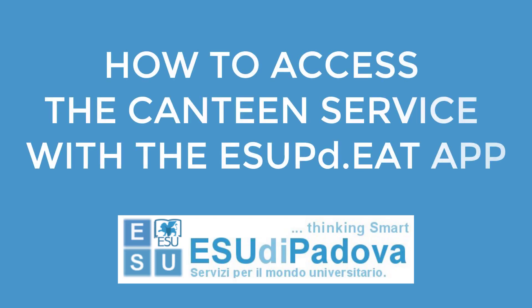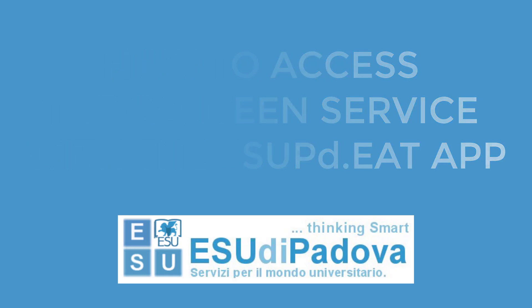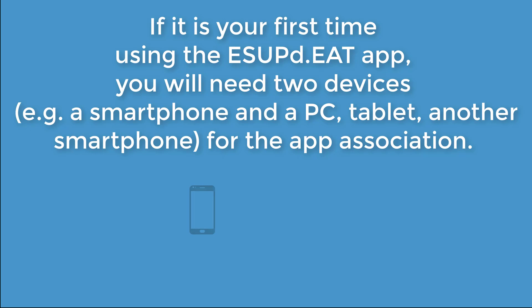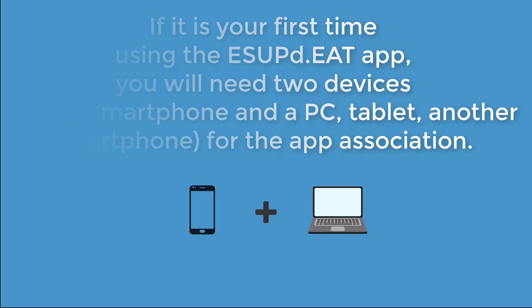How to access the contained service with the asopd.it app. If it is your first time using the asopd.it app, you will need two devices — for example, a smartphone and a PC, a tablet, or another smartphone for the app association.